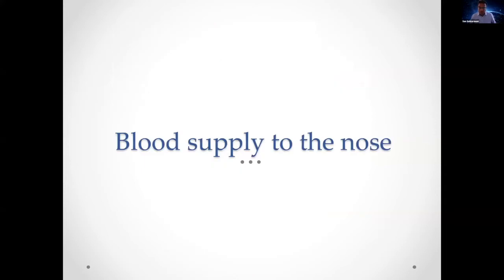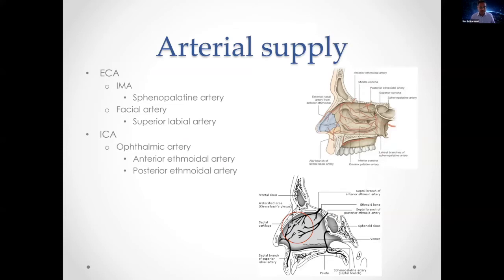Briefly on the blood supply to the nose — there is a dual system, from both the external and internal carotid systems. The external carotid gives off the maxillary artery (often called the internal maxillary artery), which gives a sphenopalatine branch supplying the bulk of the lateral nasal wall and nasal septum. It also gives off the posterior septal artery, very important for skull base surgery as it supplies the nasoseptal (Hadad) flap used for skull base reconstruction after tumor resection.